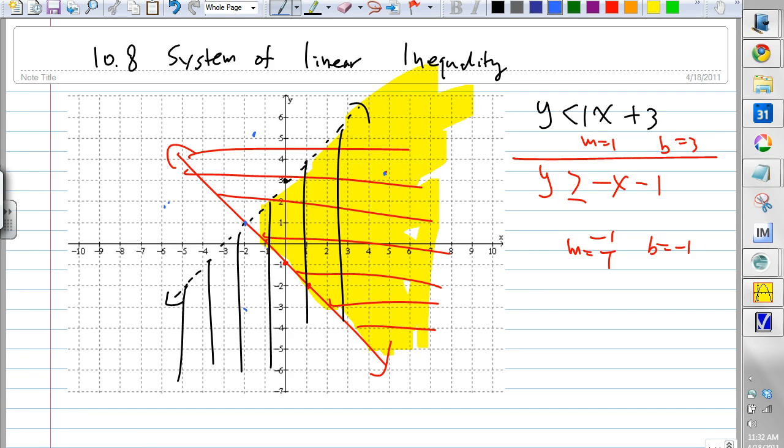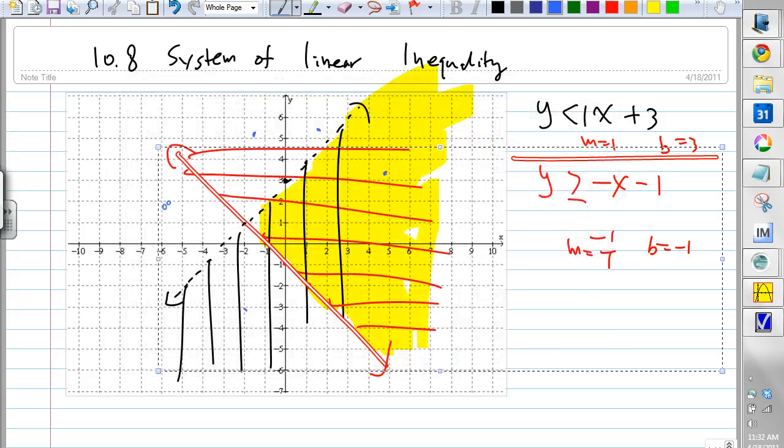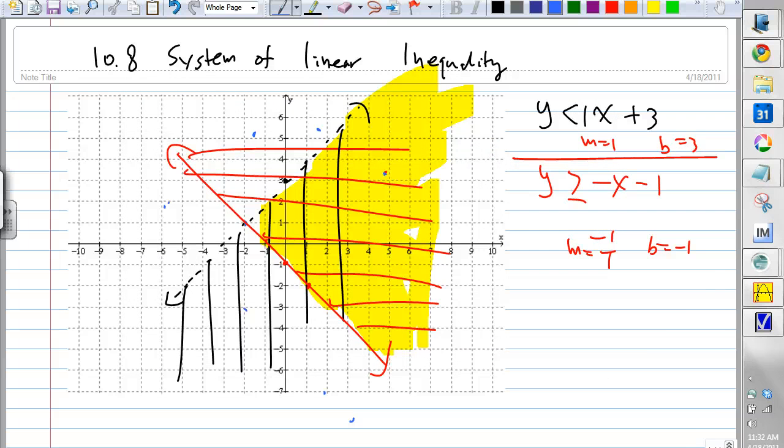What about this point that is on this dotted line? Is that a solution? No. On the dotted line, is that a solution? No, it is not. What about on the red line? Yes, it is, because on the red line, right, it is a solution to both of the inequalities. Does this make sense? Yes.